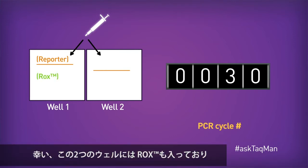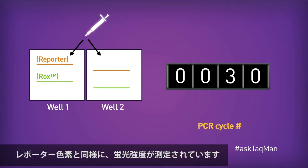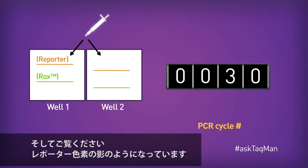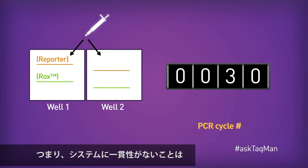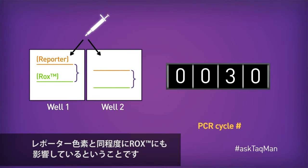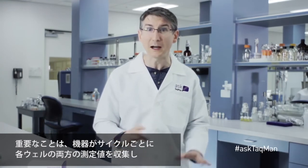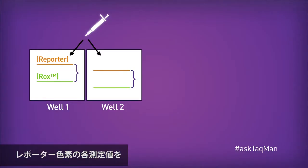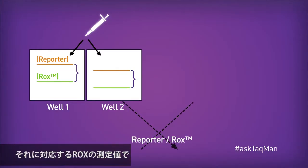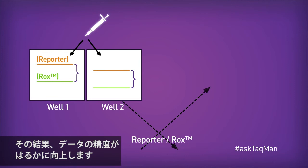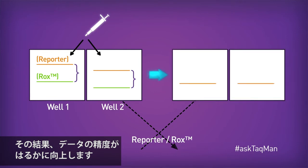Fortunately, we also have ROX in these same two wells, and like the reporter, it's also being measured. And look, it's actually shadowing the reporter. In other words, the system inconsistency is affecting ROX to the same degree that it's affecting the reporter.